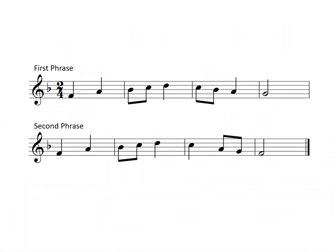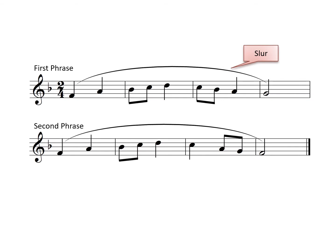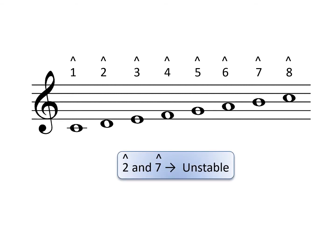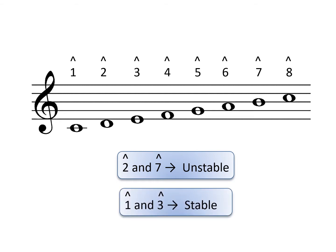In Level 5, we learn that melodies divide into phrases, which are often marked with slurs. Phrases that end on unstable scale degrees 2 or 7 sound unfinished, whereas those that end on stable scale degrees 1 or 3 sound finished.